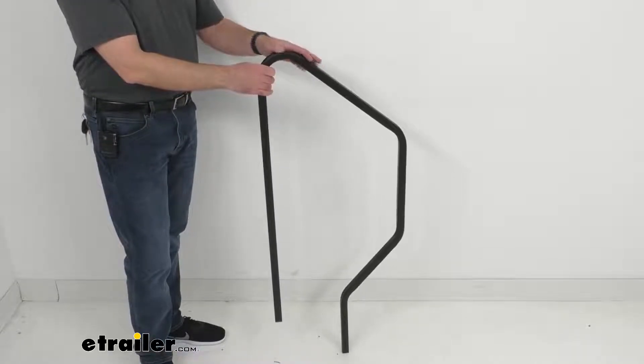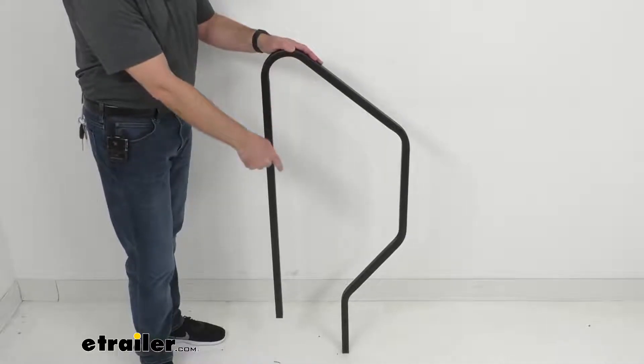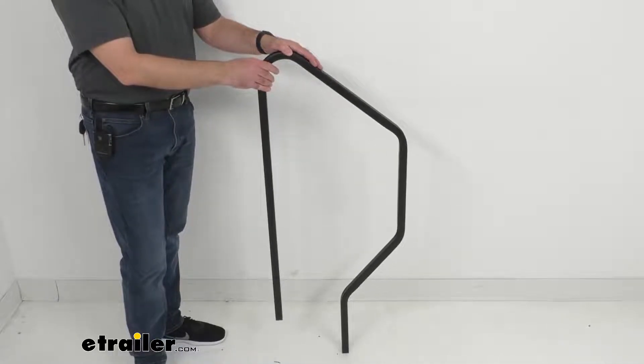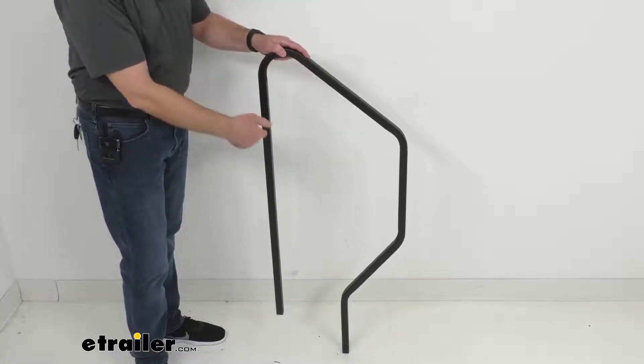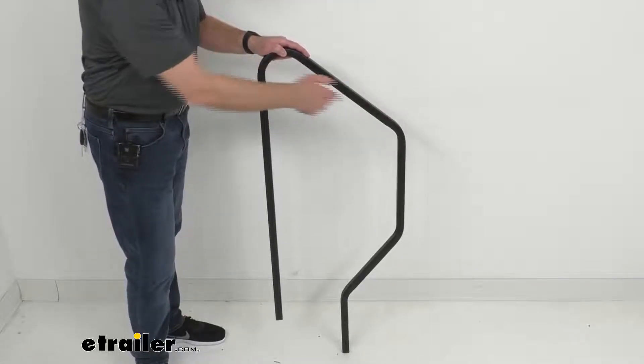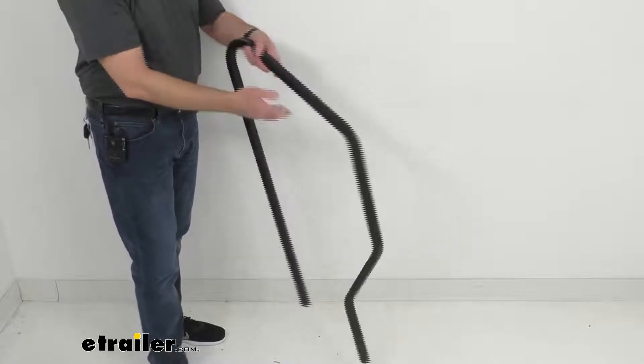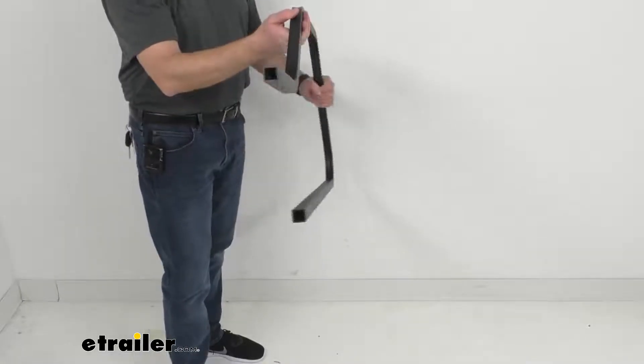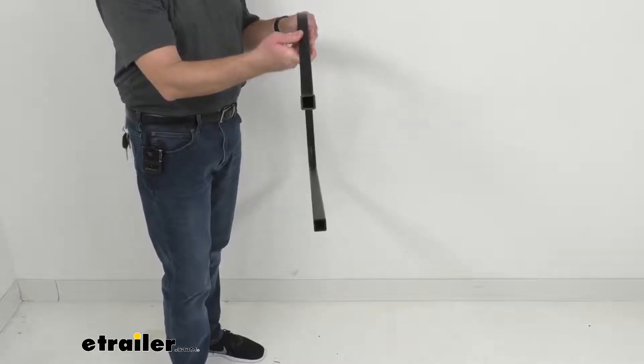So the overall height of this handrail is 45 and 7/8 inches tall, and the length is 18 and 3/8 inches long. And the diameter of this handrail is 1 inch.